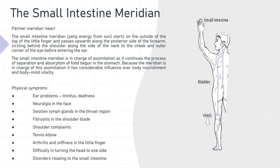The partner meridian for the small intestine is the heart. The small intestine meridian — yang energy from the sun — starts on the outside of the top of the little finger and passes upwards along the posterior side of the forearm, continuing behind the shoulder, along the side of the neck to the cheek and outer corner of the eye before entering the ear. The small intestine meridian is in charge of assimilation as it continues the process of separation and absorption of food begun in the stomach. Because the meridian is in charge of this assimilation, it has considerable influence over body nourishment and body-mind vitality.